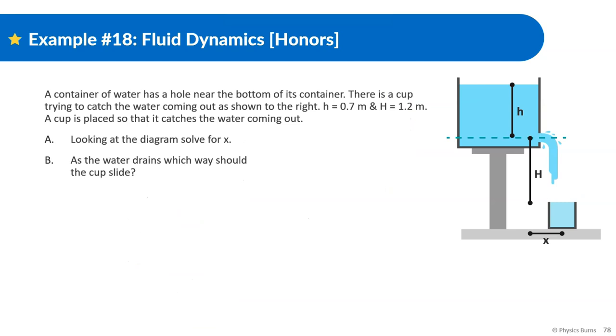Moving on. A container of water has a hole near the bottom of this container. There's a cup trying to catch the water coming out as shown to the right. If h is equal to 0.7 meters and capital H is equal to 1.2 meters, a cup is placed so that it catches the water coming out. Look at the diagram to solve for x. So we're looking for what x is equal to. A lot going on here. This is honestly more of a projectile motion problem than anything, but let's figure out a few things first. The first step is to figure out what is this initial velocity going to be.